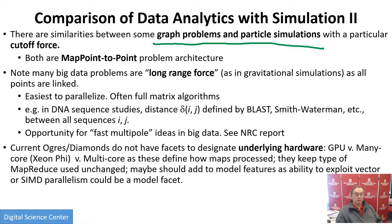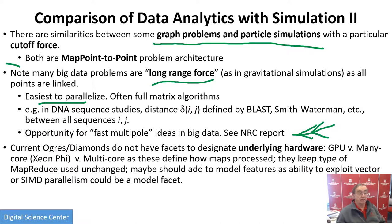If we have full matrices, like the gene problem where everything is connected to everything, that's like long-range force problems in the simulation world. They are actually straightforward to parallelize — full matrix algorithms are the easiest to do. But if you have n things, there are n-squared connections, and if n is a billion, n-squared is pretty big. So you try to reduce that from order n-squared to order n log n. That's the fast multipole method when applied in simulations to speed up long-range force problems, but it's not as clearly done in the big data field, though there are papers in this area.